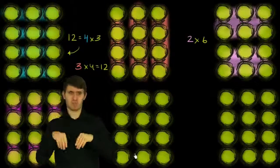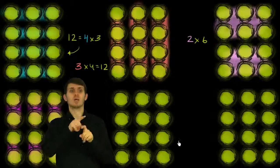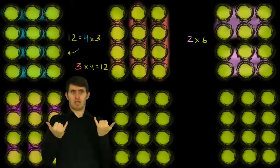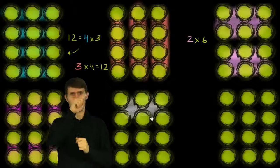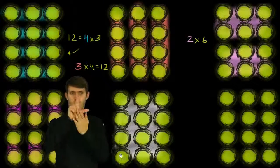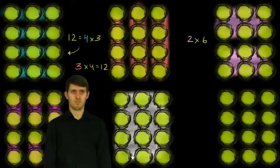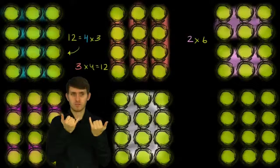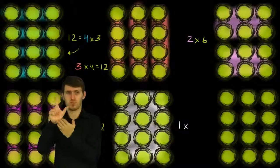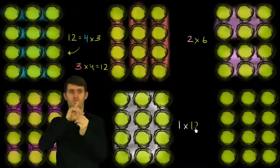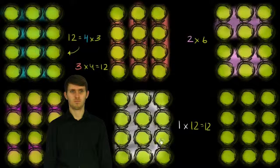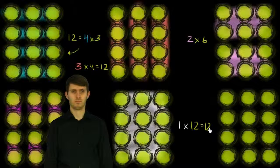But we don't have to stop there. We could also literally view 12 as 1 group of 12. This whole thing is just 1 group of 12. So we could say 1 times 12 is equal to 12. We have 1 entire group of 12.